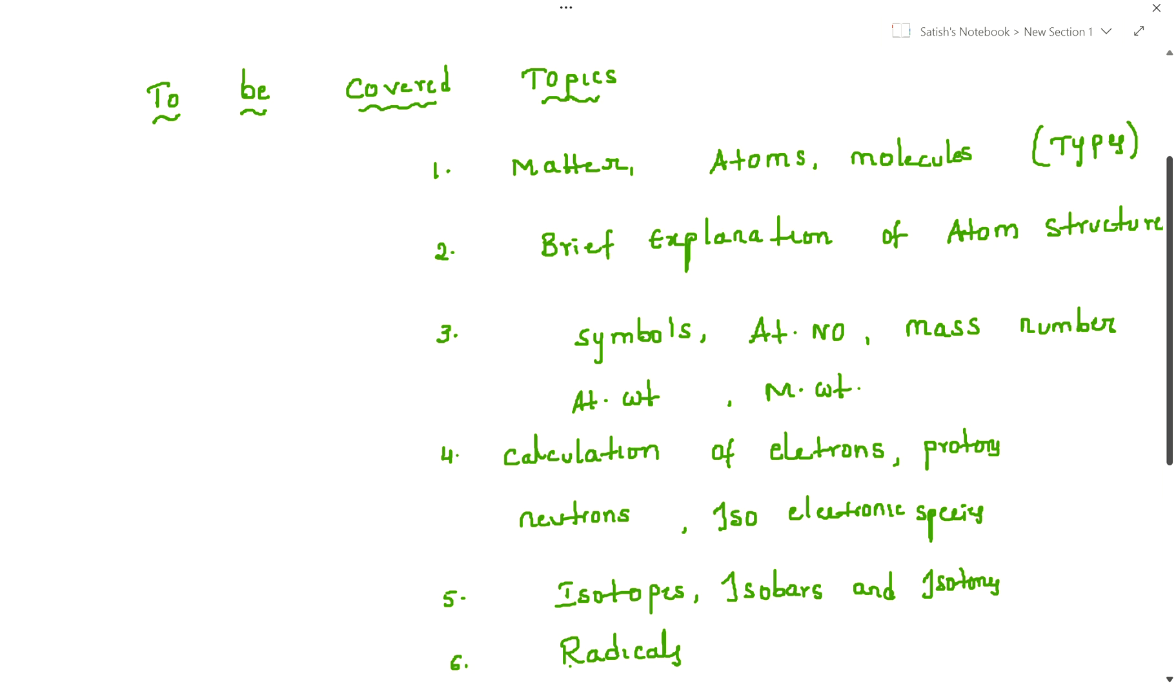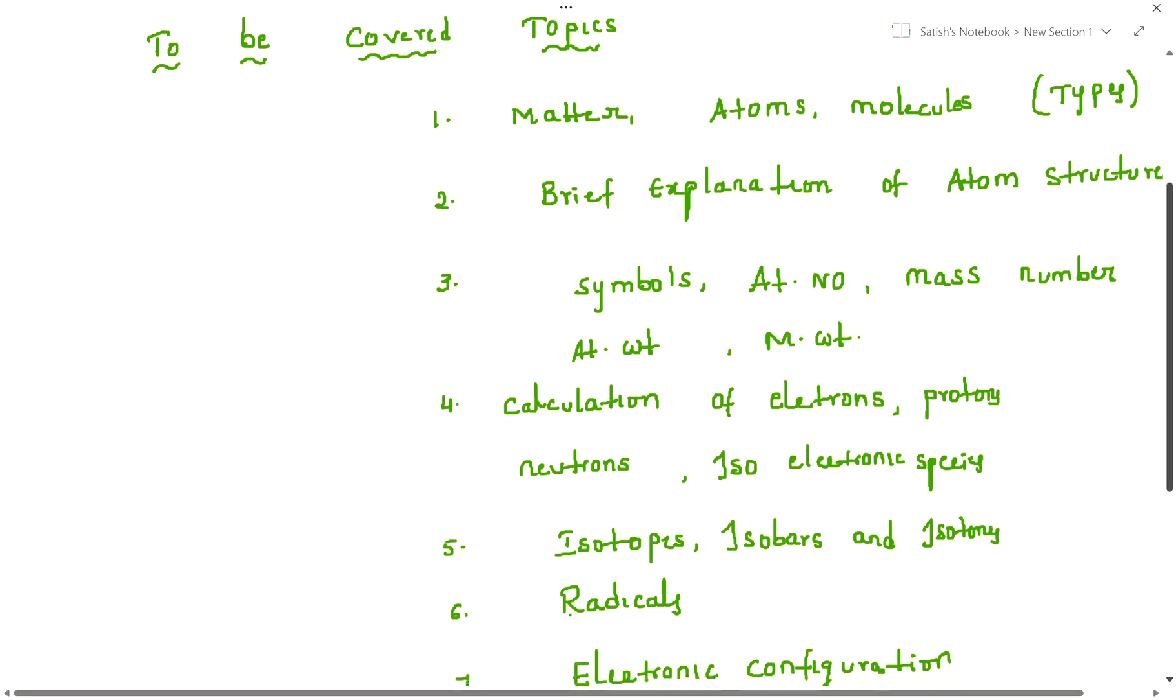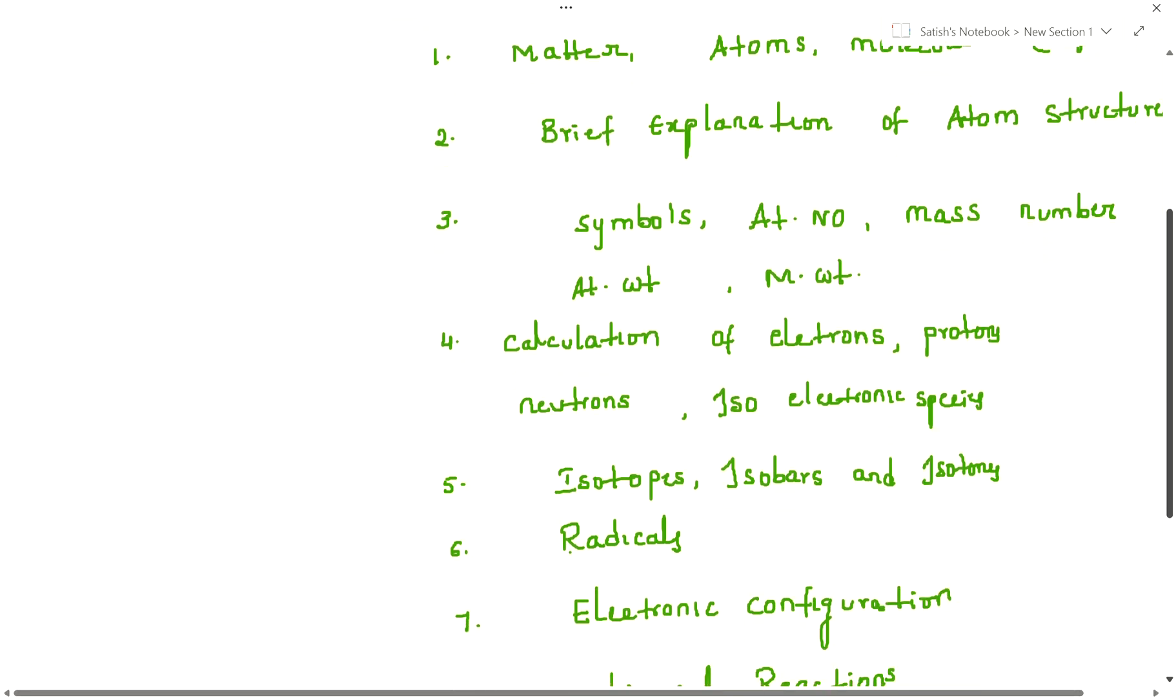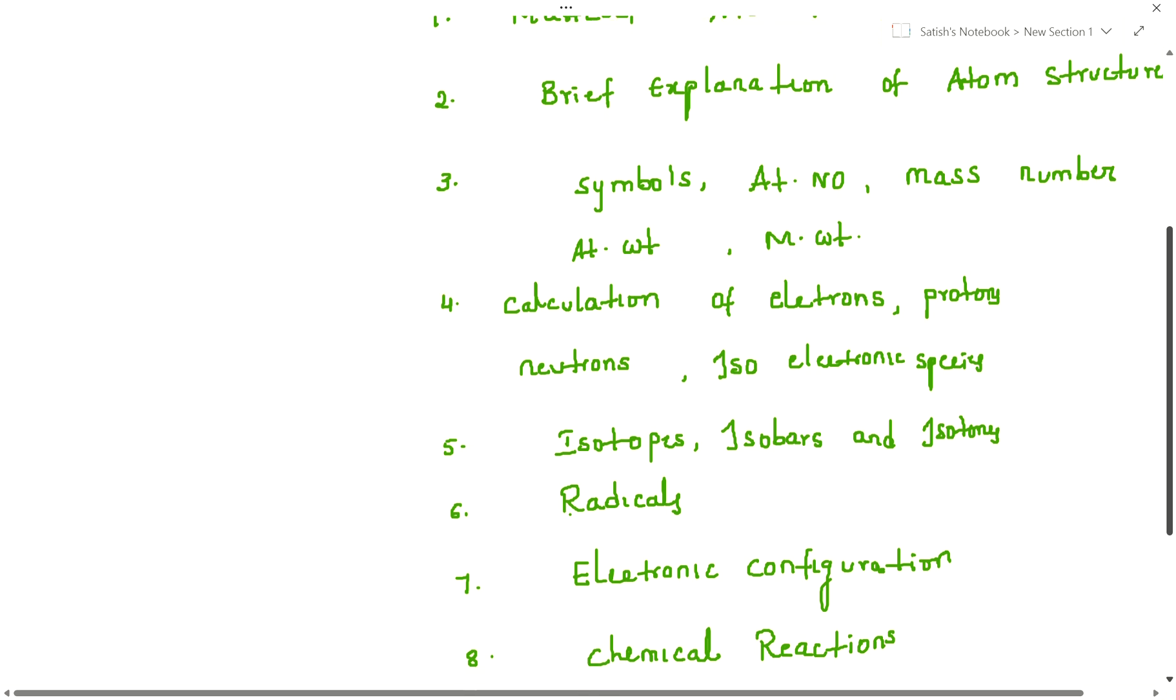The sixth topic is radicals: what are basic radicals, unipositive, dipositive, tripositive, uninegative, dinegative. Everything will be discussed in the radical session. Next is electronic configuration rules.